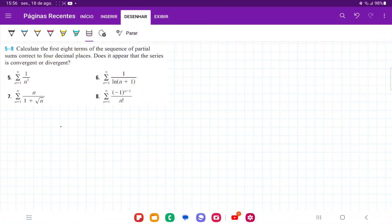So for number 8, it wants us to calculate the first 8 terms of the sequence of partial sums to 4 decimal places. That means we're plugging in from n equals 1 all the way out to n equals 8 into this formula, and then we're summing up all these terms.